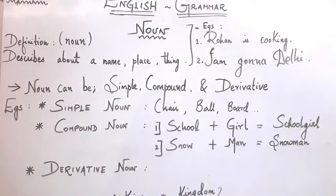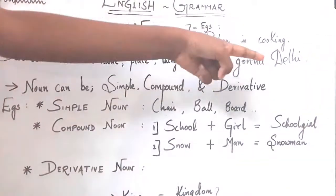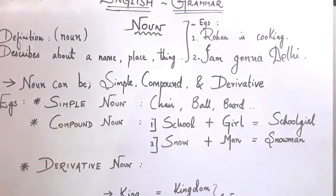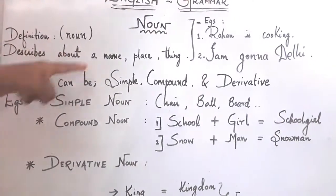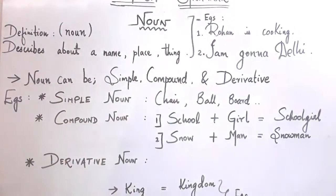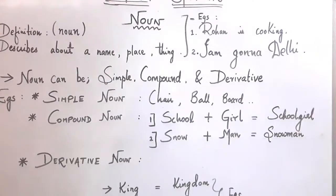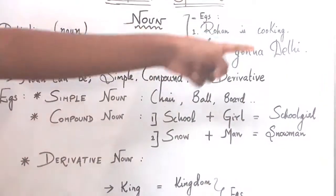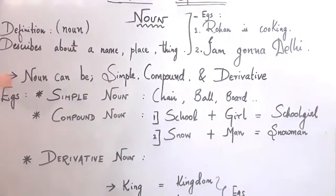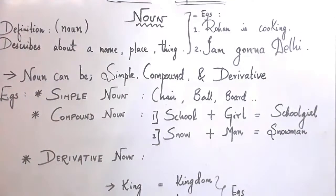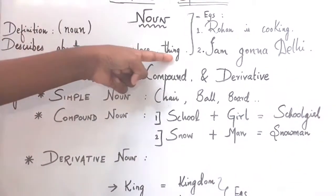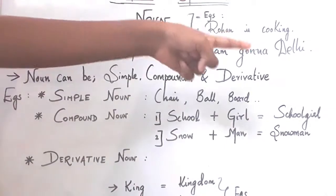Examples of nouns: 'Rohan is cooking.' Here you can identify that Rohan is the noun. As we learned, a noun describes a name, place, or thing, so Rohan is the name and hence the noun. In the second sentence, 'I'm going to Delhi,' you can identify Delhi as the noun because Delhi is a place, and hence it is the noun in the sentence.